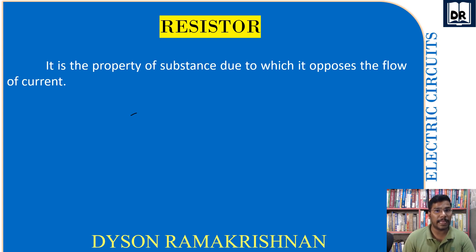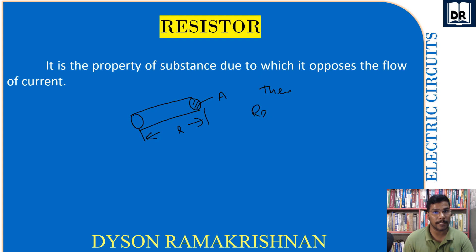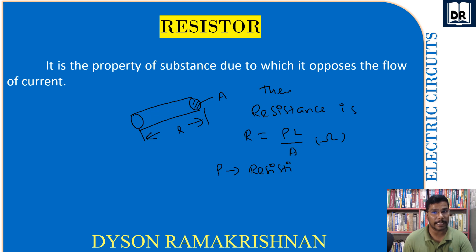If a conductor has a length l and an area of cross-section A, then resistance R is represented by the formula R = ρl/A. Here ρ is the resistivity of the conductor, l is the length of the conductor, and A is the area of cross-section of the conductor.